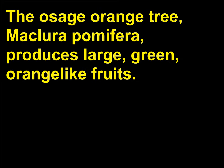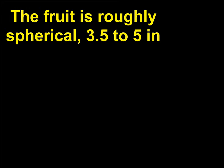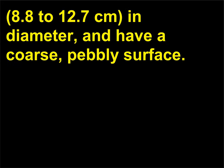What is a monkey ball tree? The Osage orange tree (Maclura pomifera) produces large, green, orange-like fruits. The fruit is roughly spherical, 3.5 to 5 inches (8.8 to 12.7 centimeters) in diameter, and has a coarse, pebbly surface.